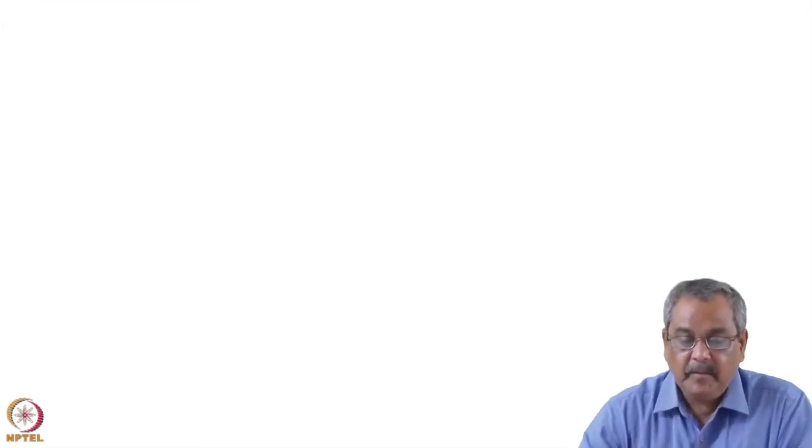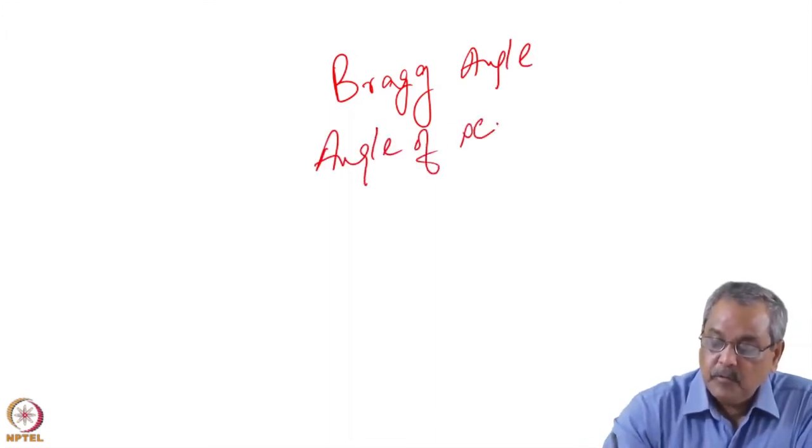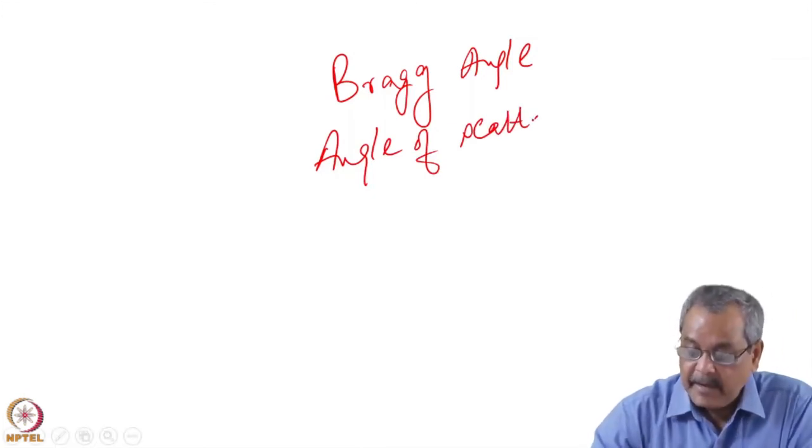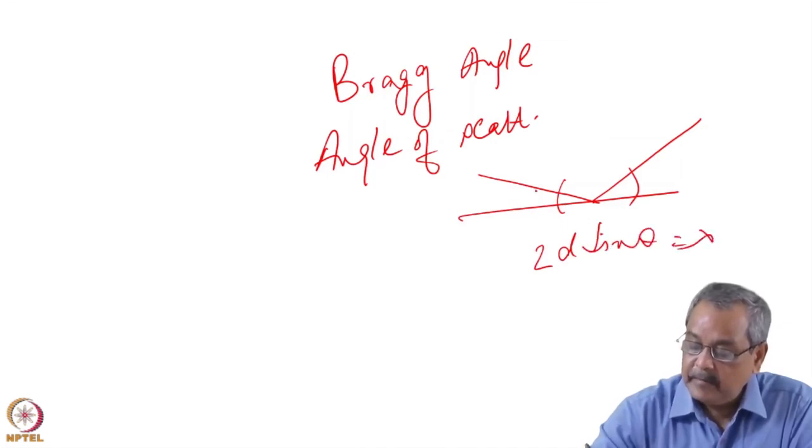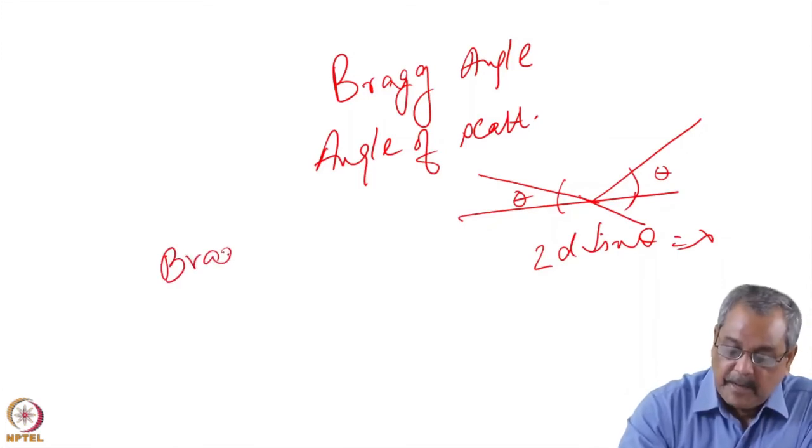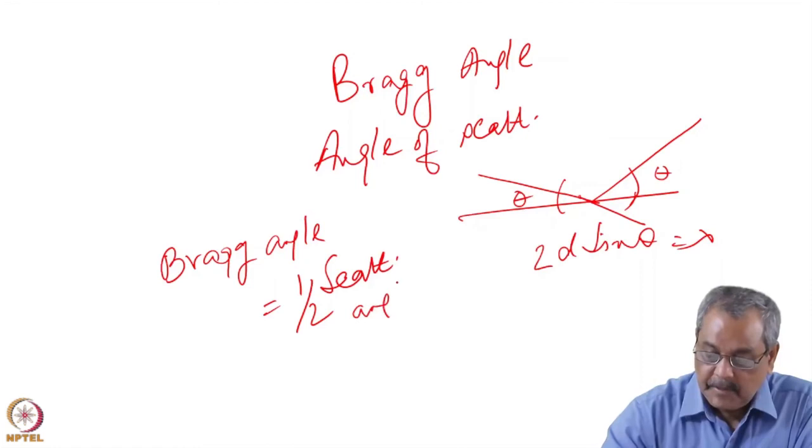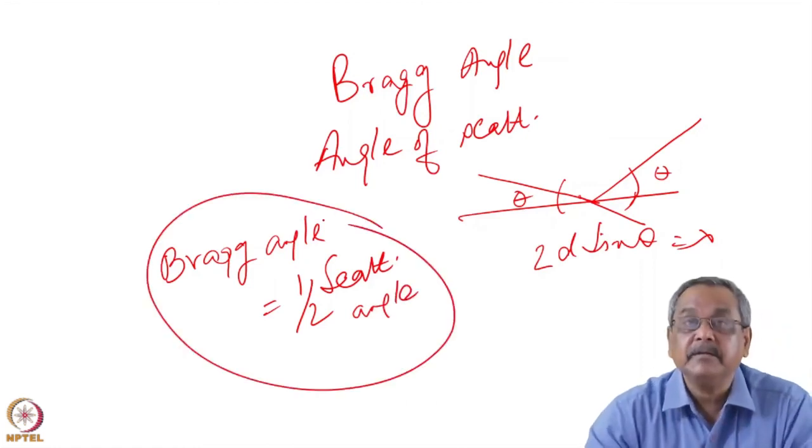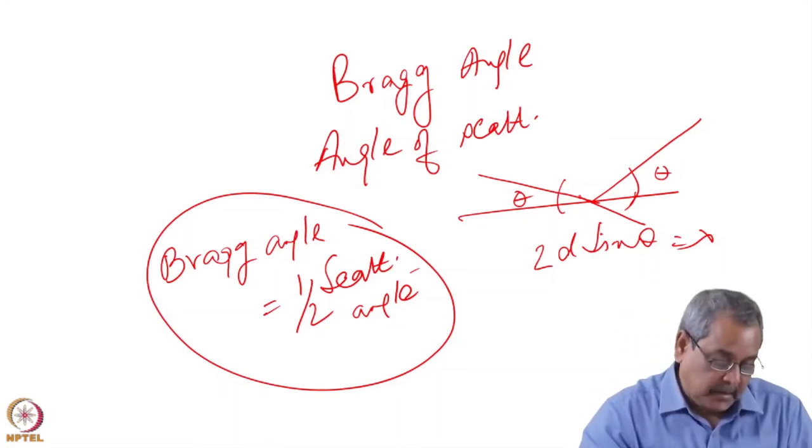Regarding scattering experiments, please remember I have used two terms: Bragg angle and angle of scattering. Please note, 2d sin theta equal to lambda is this angle, theta. But if you consider the angle of scattering, then it is 2 theta. So the Bragg angle is half of the scattering angle for the same setup. Maybe I use Bragg angle and scattering angle interchangeably. I want you to accept this part that the Bragg angle and scattering angle, they are half of each other in these lectures and sometimes in the questions maybe.